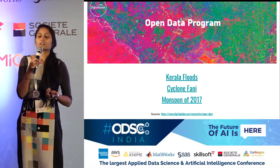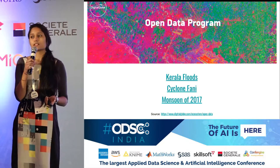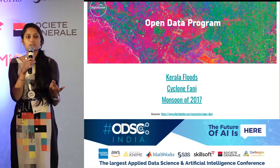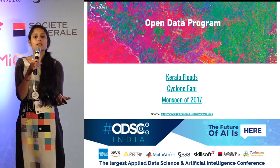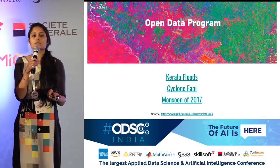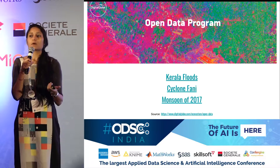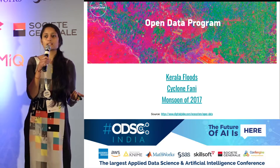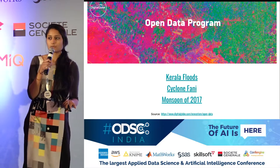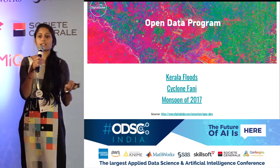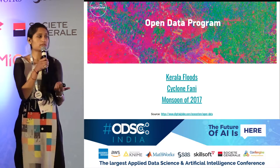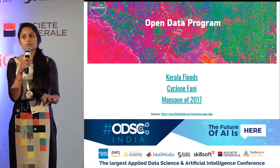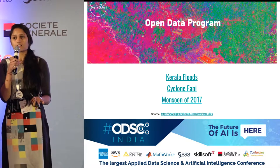Digital Globe has their own satellite called WorldView for which their data is proprietary — so that is not open — but they have an open data program which they've started specifically to publish open data on natural disasters occurring around the world. For every natural disaster event, they publish some imagery for people to analyze the data and help speed up the process of disaster response and management. For India, they have published three datasets: Kerala floods, the recent Cyclone Fani, and the monsoon of 2017. You can get this data from their website and start exploring — for example, you could do an impact analysis of these disasters. They give two types of images: pre-event and post-event.